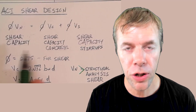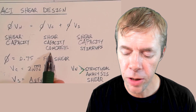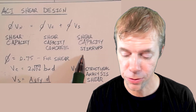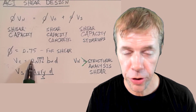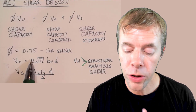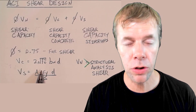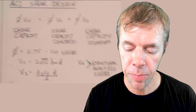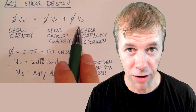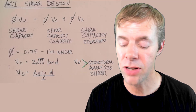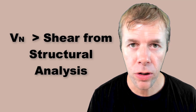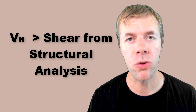ACI 318 says the shear capacity is equal to your capacity of the concrete plus the shear capacity of the stirrups. When we design for shear, the capacity of the concrete always uses a factor of 0.75. V sub C is equal to 2 times the square root of f prime C times bw times d. V sub S, the shear capacity of the stirrups, is Av times fy times d, all divided by s. We want our capacity to be greater than the shear we calculate from our structural analysis.